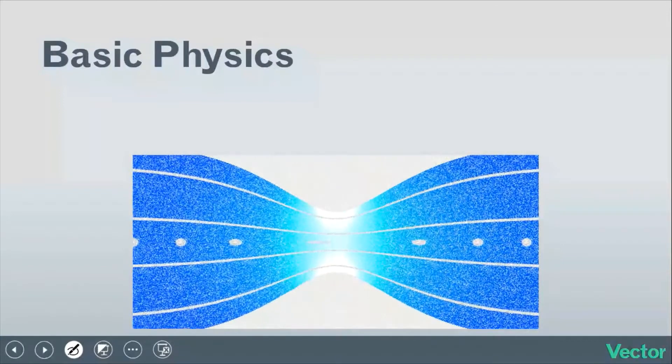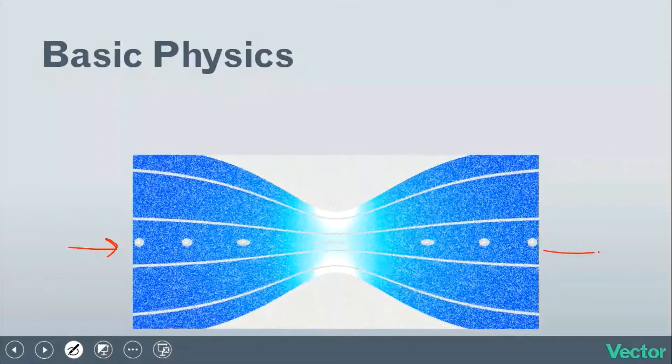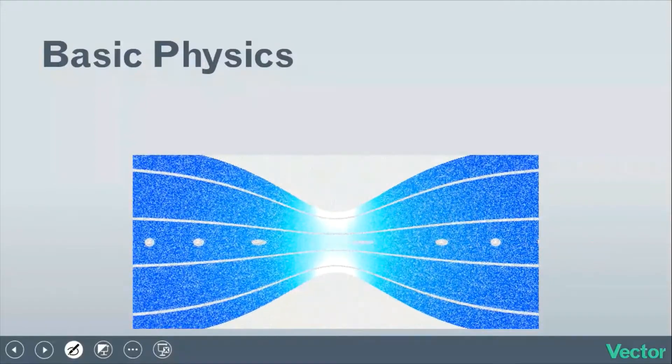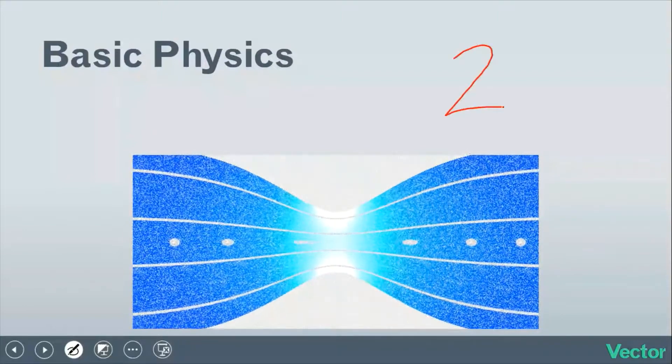The continuity equation says that the input rate must always equal the output rate. So let's say, for example, the fluid is flowing through this venturi tube at 20 gallons per minute.